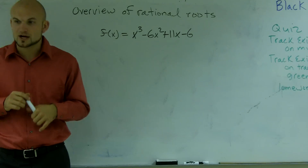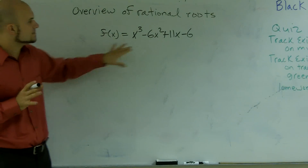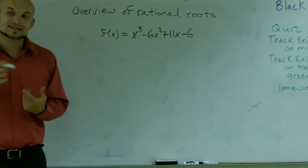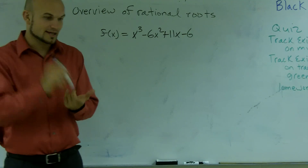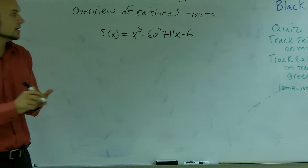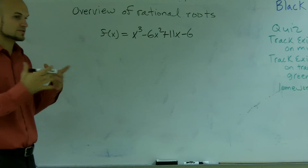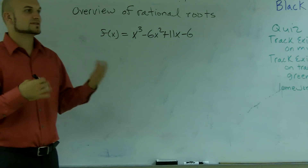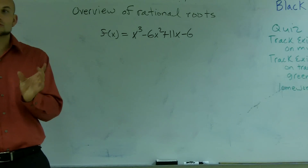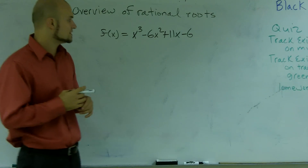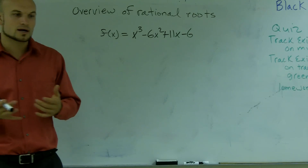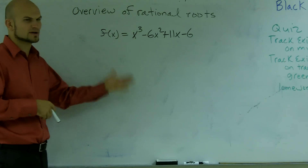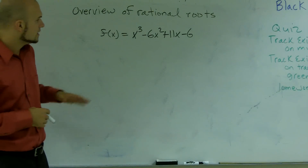The first is the Fundamental Theorem of Algebra. What that says about this polynomial is that there exists a root in the complex number system, meaning it can be real or imaginary. If it's real, it's going to cross the x-axis, so we can figure out where those are. If it's imaginary, it won't cross, but we can still figure out the roots using imaginary numbers, as described in our imaginary and complex numbers section.